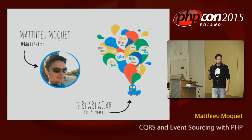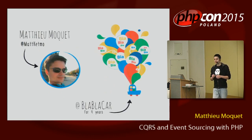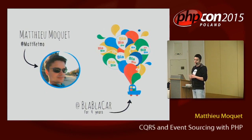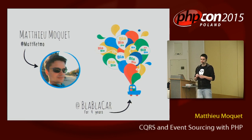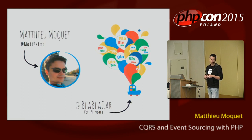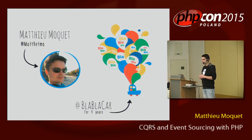Let me present myself in a few words. I'm Mathieu Moquet, alias MattCatmo on GitHub and Twitter. I worked for four years at BlaBlaCar as a web developer and web architect. BlaBlaCar is a 20 million users ride-sharing company.